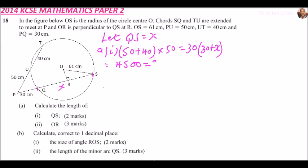900 plus 30x. So you can say 30x equals to, when you take 900 to the left side, you get 3600.